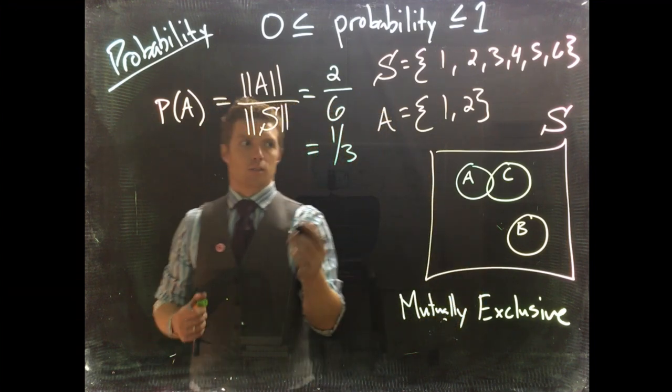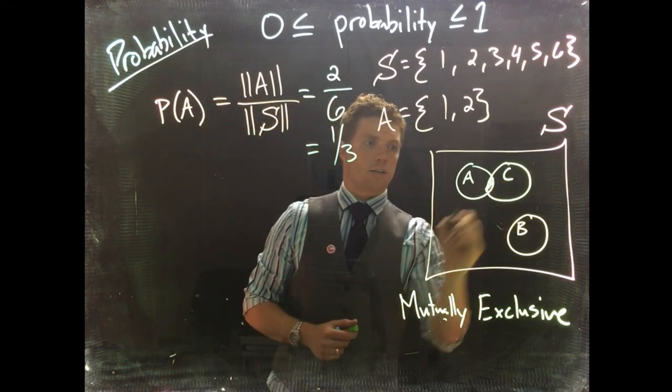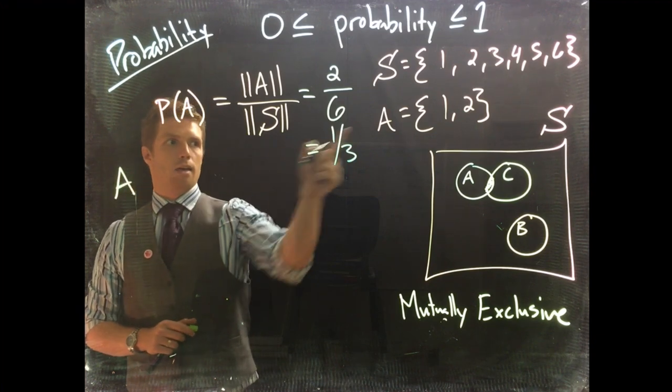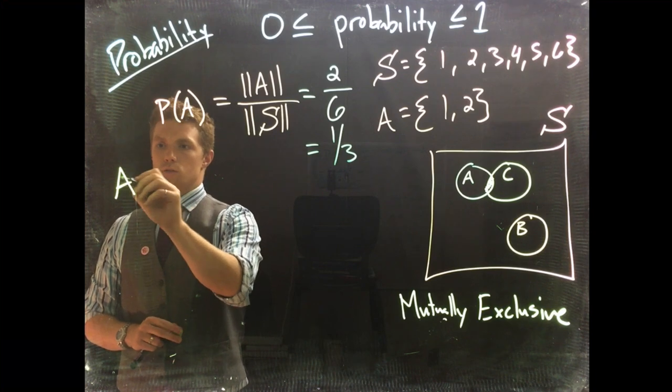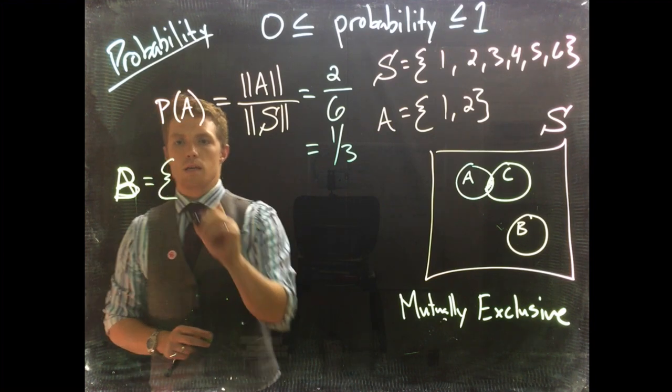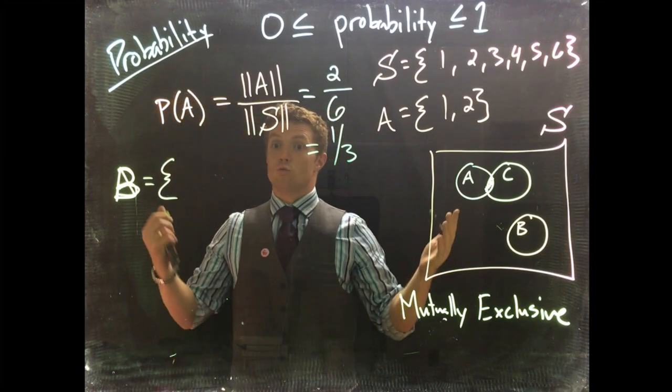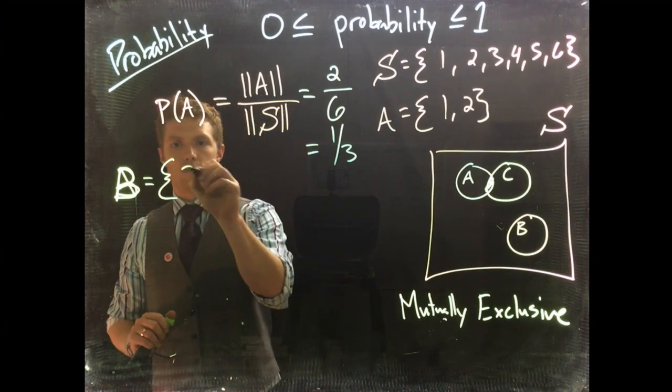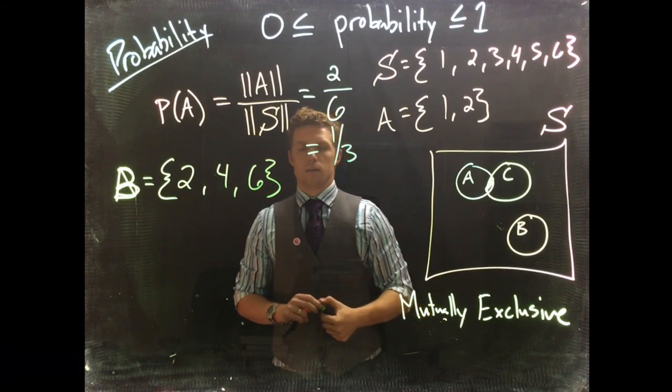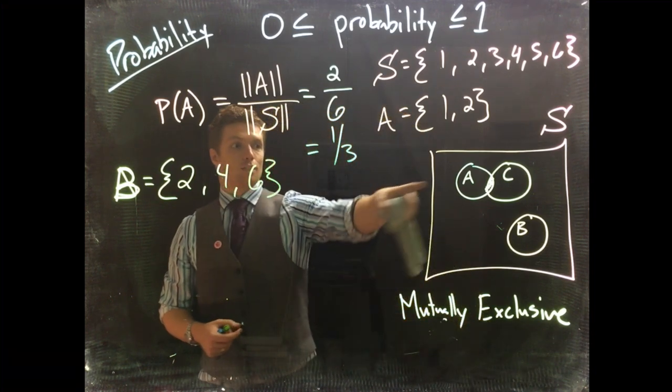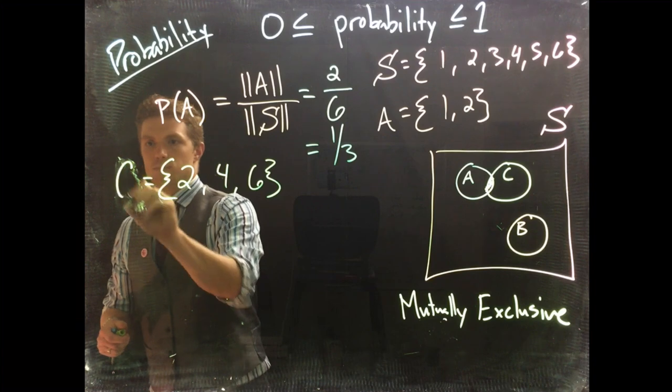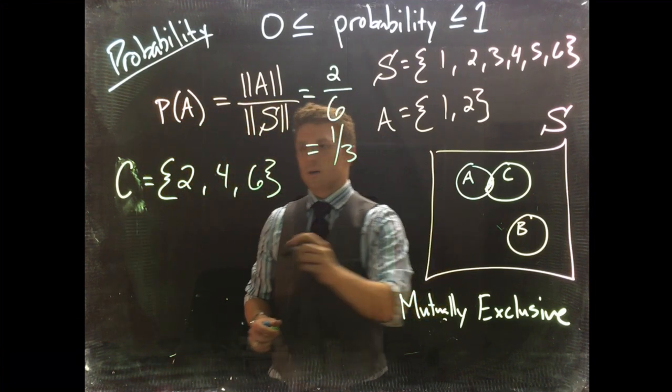Let's do a new event. We've got event A over there, and now we're going to do event C. Event C will be rolling an even number, so we've got 2, 4, and 6 for our even numbers.